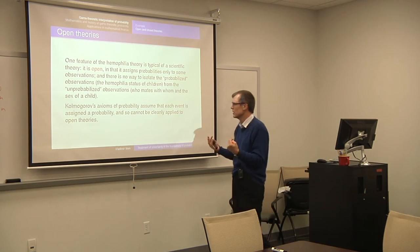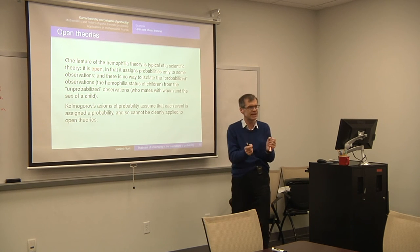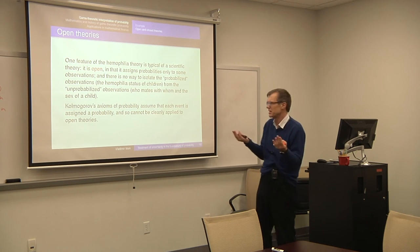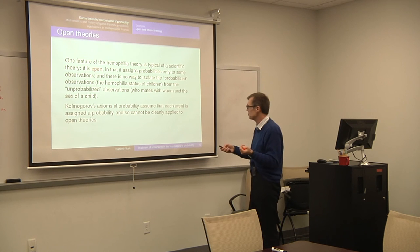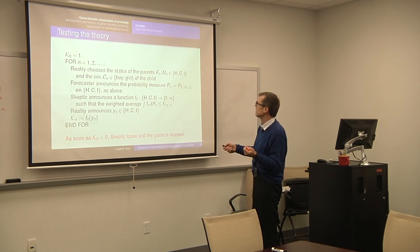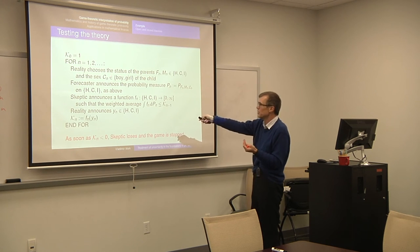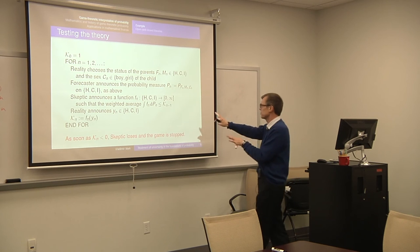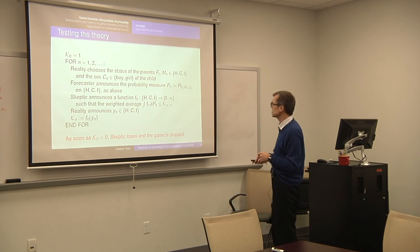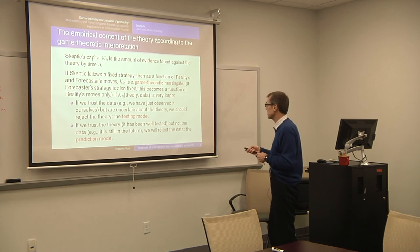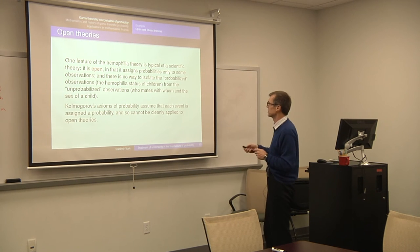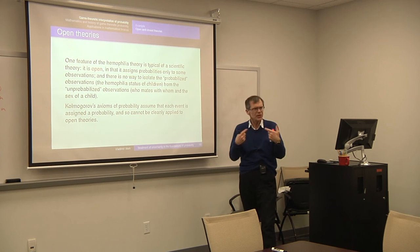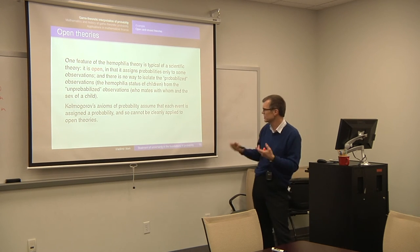This protocol is open — at least we can't cleanly apply Kolmogorov's or measure theoretic probability in this case. In measure theoretic probability, every event must be measurable, which is a technical requirement. An event like 'Cn is a boy' doesn't have any probability in this picture. The status of the parents is just chosen by reality. There are lots of observations that don't have any probabilities, but some other observations do have probabilities. Formally, Kolmogorov's axioms of probability are not applicable here in a clean way.